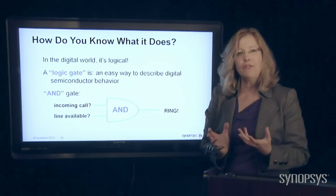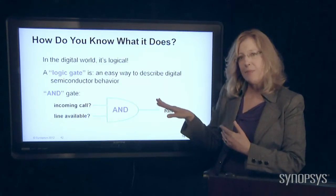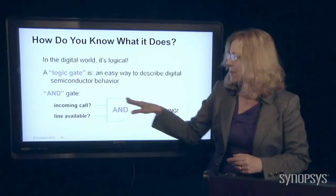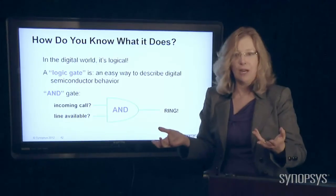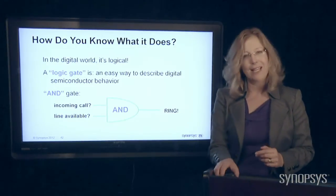There are lots and lots of different kinds of gates. An AND gate is the most simple one. But you can see from this it's very easy for us to understand now how to make a cell phone ringer, for instance, with a simple gate like an AND gate.